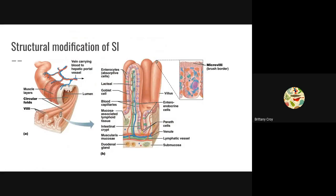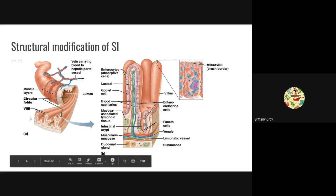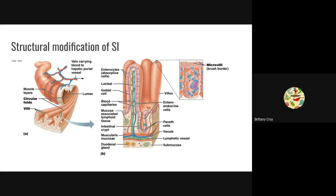The small intestine has several structural modifications that allow it to function better. For example, the small intestine has what's called circular folds — deep permanent folds of the mucosa and submucosa, similar to the rugae in the stomach except these are permanent. The folds force the chyme to spiral as it moves through the small intestine, and because it's spiraling it moves slower, which gives the small intestine time to absorb the nutrients.